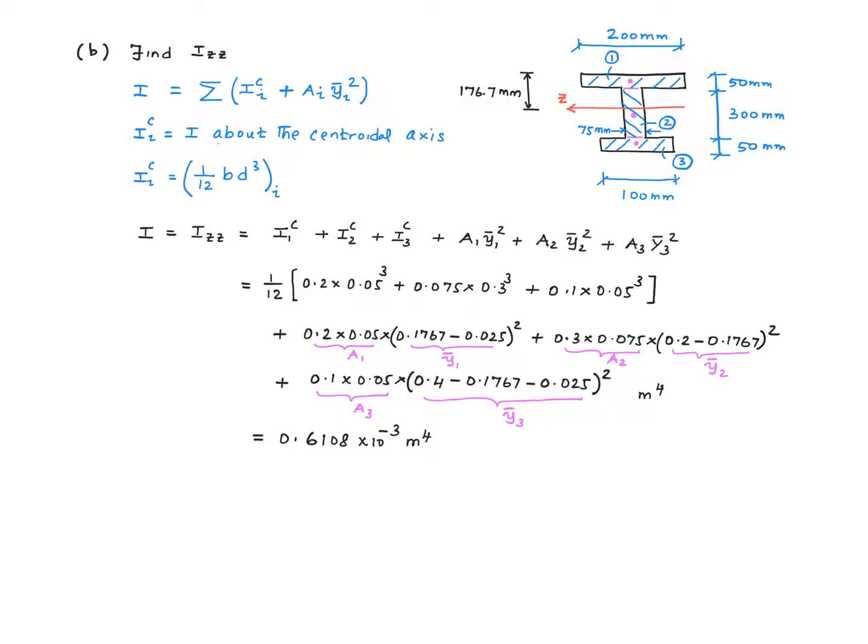Let's look at the details of a1 times y1-bar squared. a1, of course, is 0.2 multiplied by 0.05. So that's what I have over here.